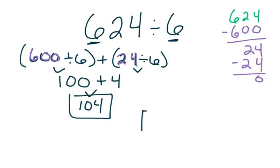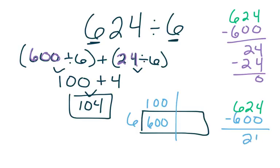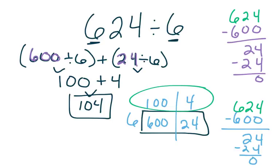I'm going to check my work using my area model. I draw my rectangle, place my whole of 624 off to the side, and place my 6 on one side. I need to get all the way to 624, so I multiply 6 times 100, because that gets me 600, which is pretty close to 624. I subtract 600, get 24, and then 6 times 4 gives me 24. I subtract my 24 and I'm left with 0. Adding these pieces up, my partial quotients add to 104 as my quotient.